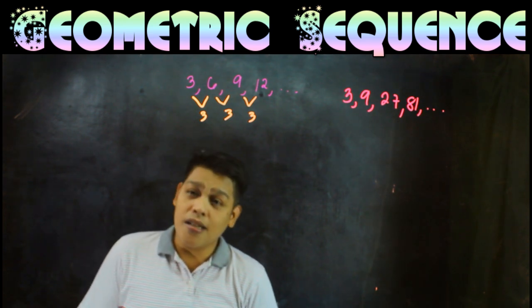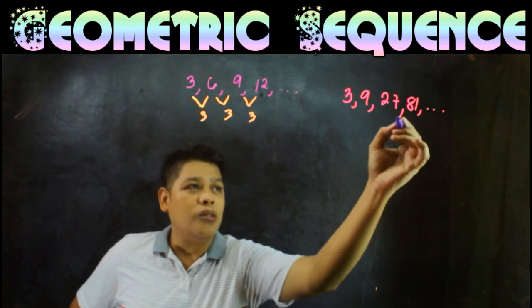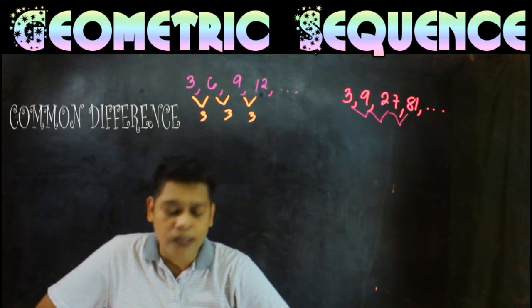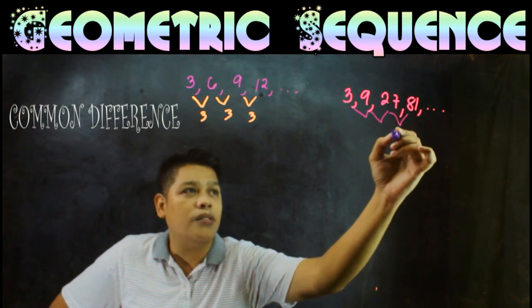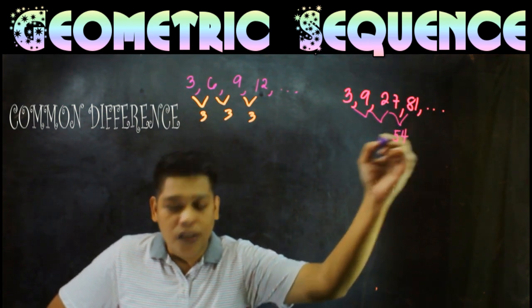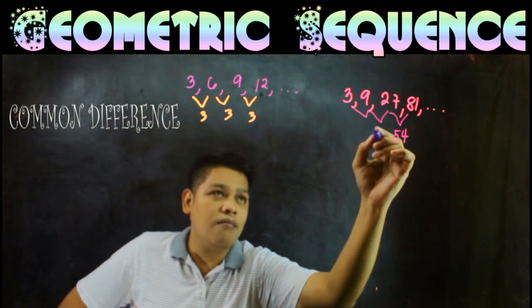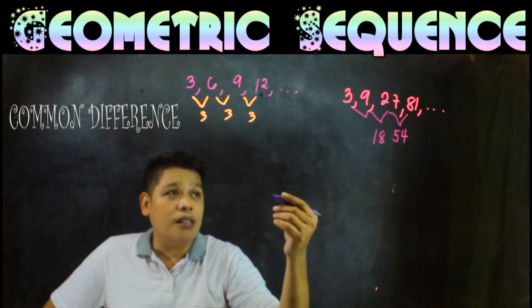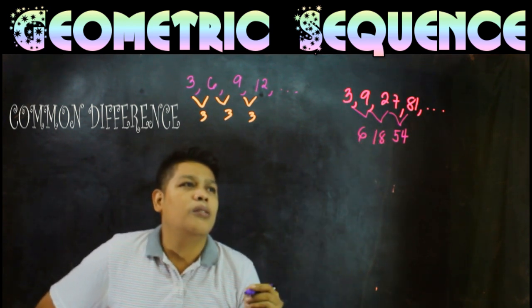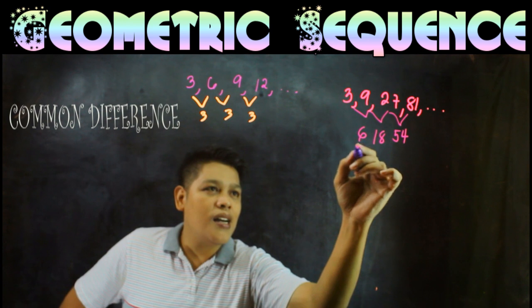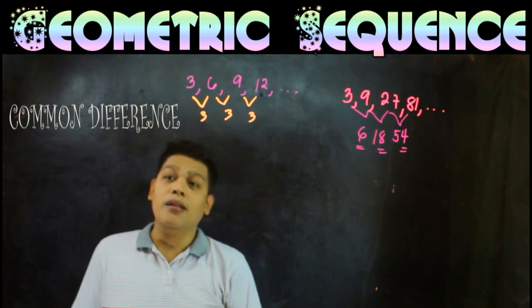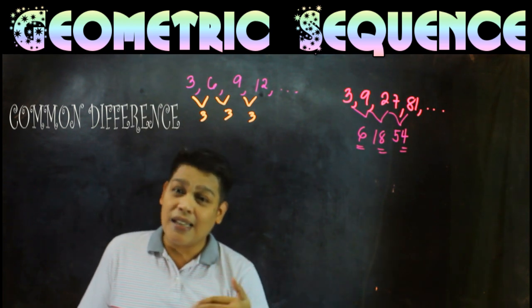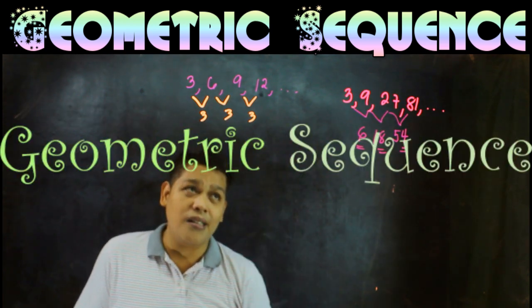If this is arithmetic sequence, we subtract these. We should get a common difference. When we subtract, 81 minus 27 is 54, and 27 minus 9 is 18, and 9 minus 3 is 6. We can see there's no common difference. So this means this sequence is not an arithmetic sequence. This is a geometric sequence.